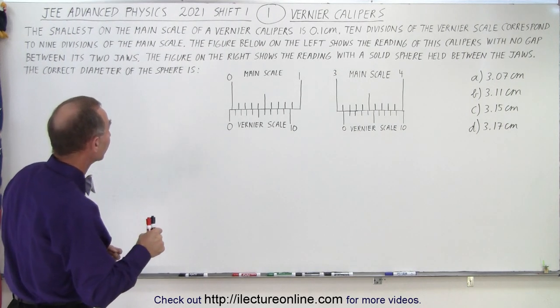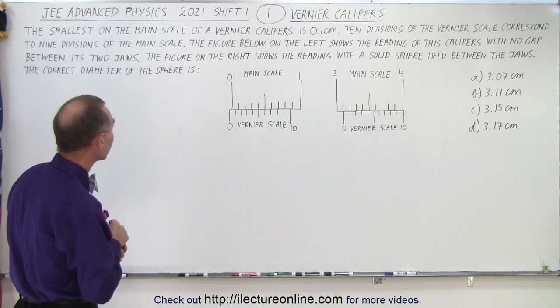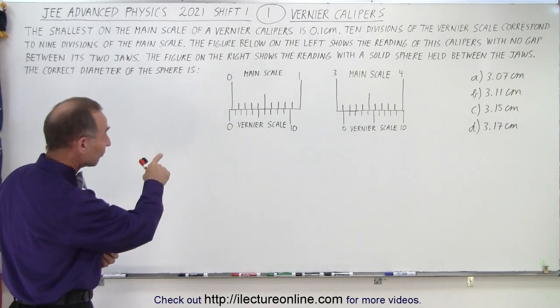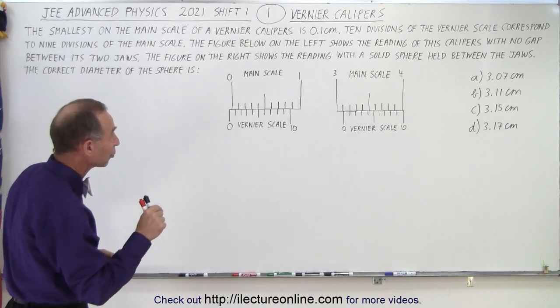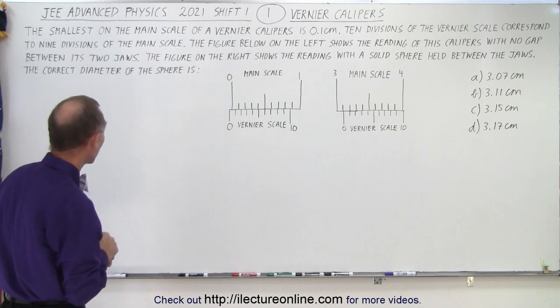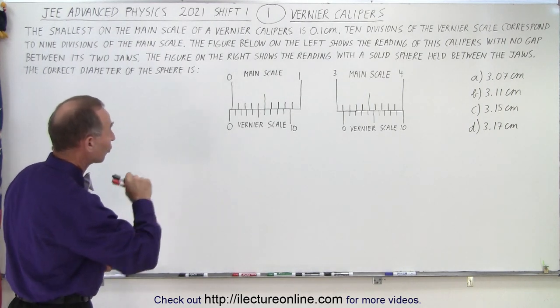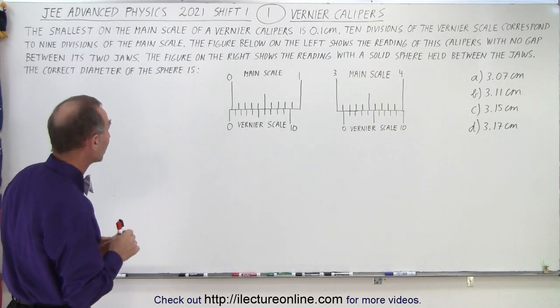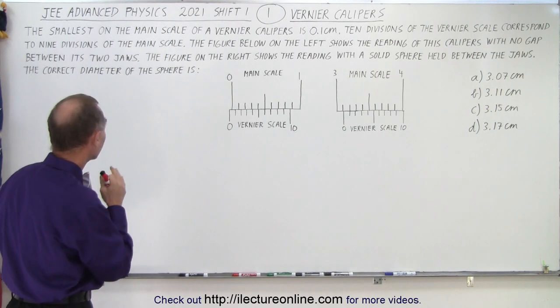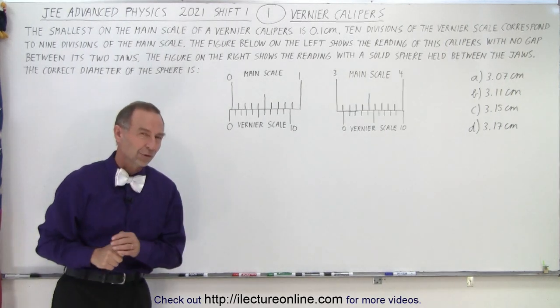Ten divisions of the vernier scale correspond to nine divisions of the main scale. The figure below on the left shows the reading of these calipers with no gap between its two jaws. The figure on the right shows the reading with a solid sphere held between the jaws. The correct diameter of the sphere is, and they give us four possible answers.